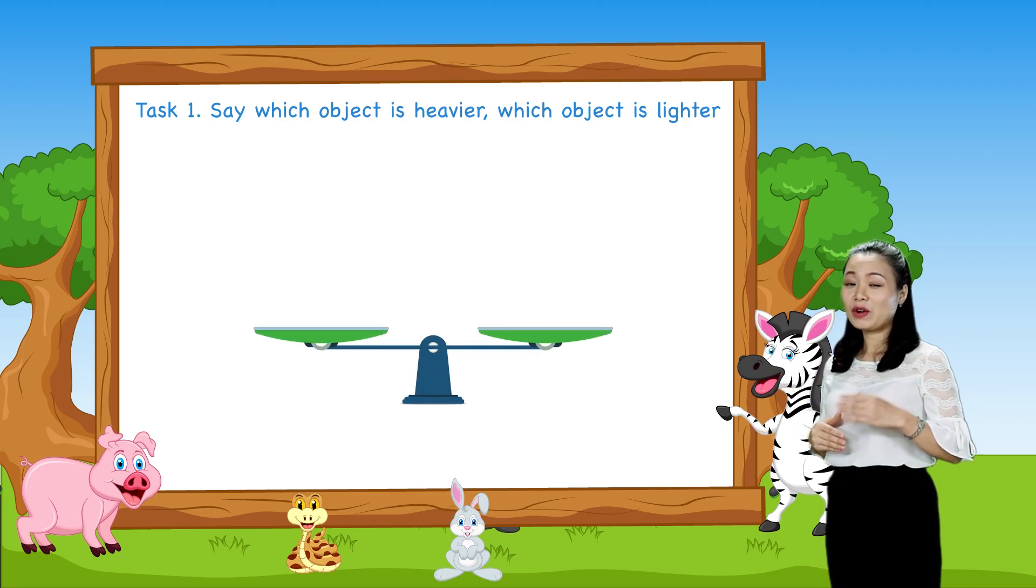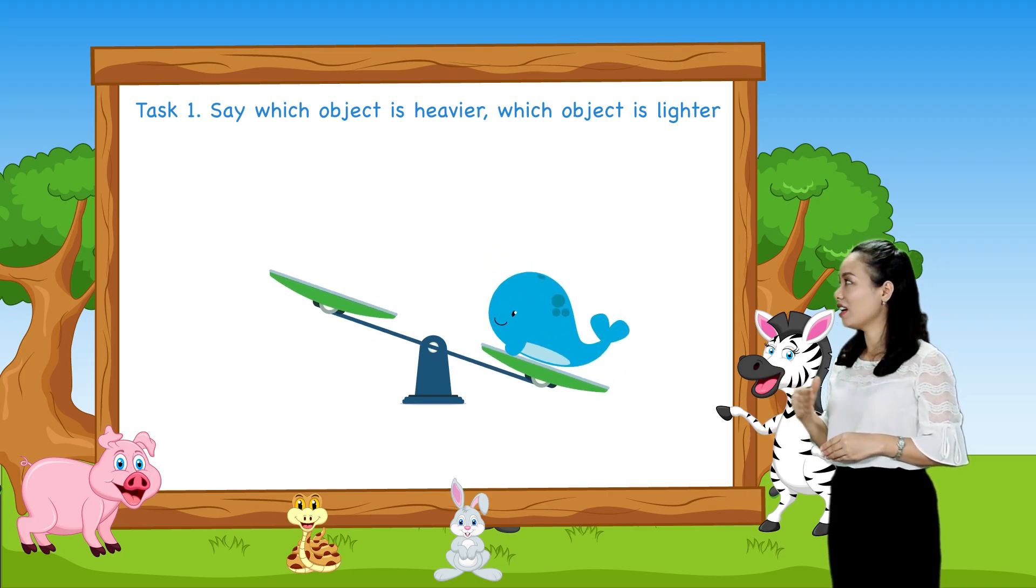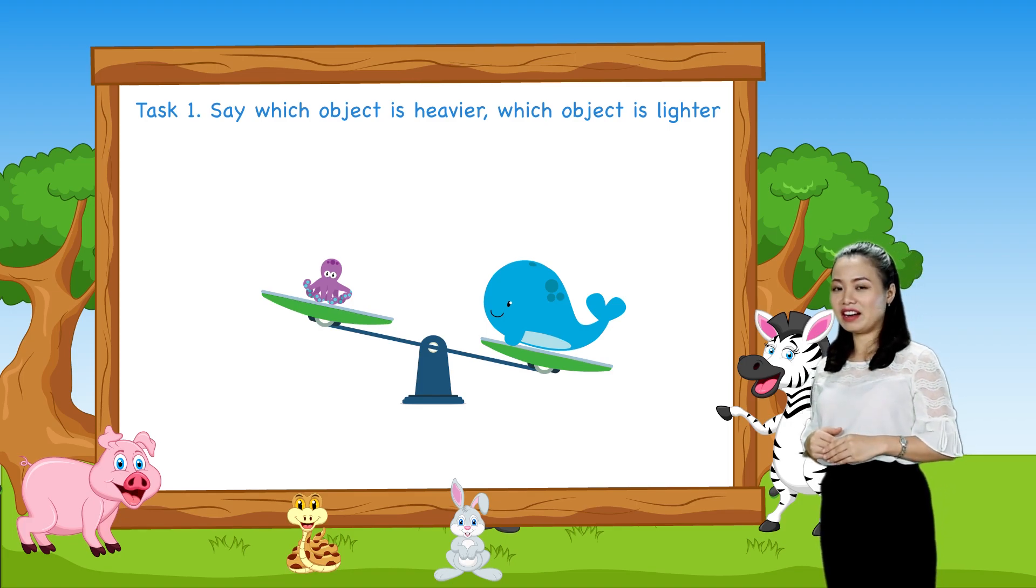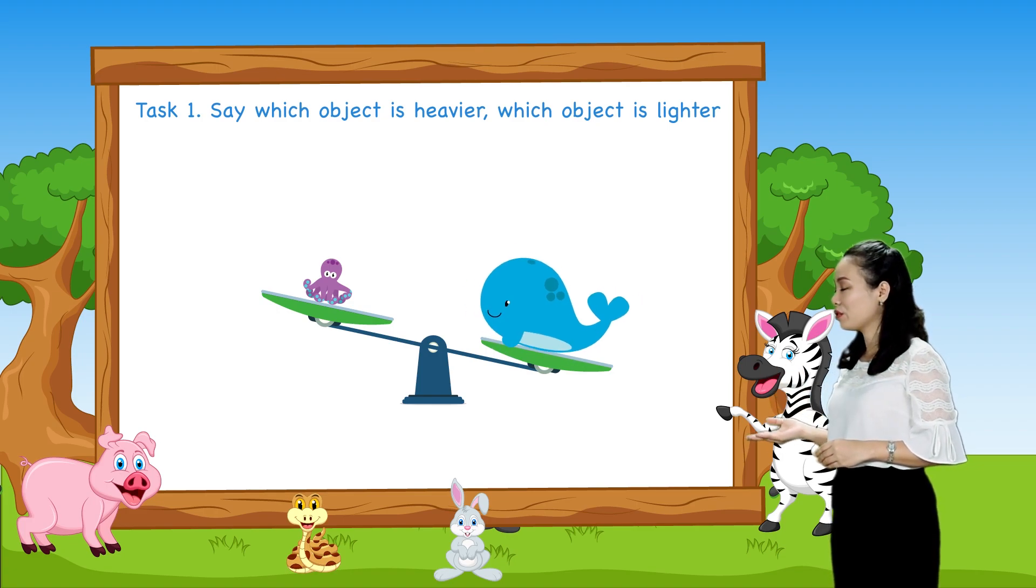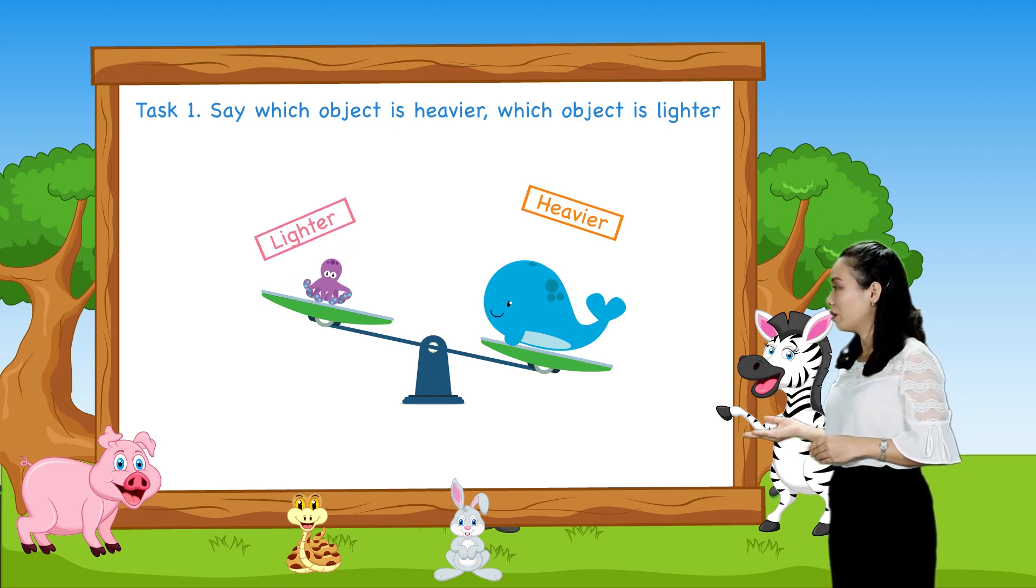Here we have a whale and an octopus. Which one is heavier? Which one is lighter? So the whale is heavier than the octopus or the octopus is lighter than the whale.